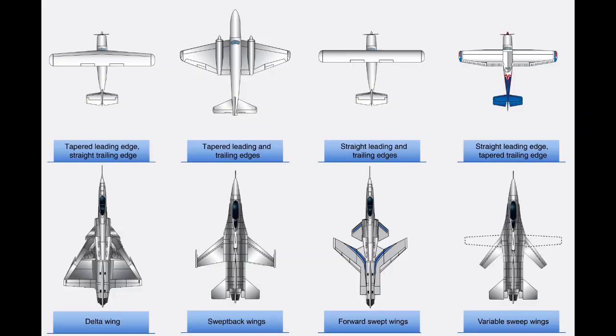Both the leading edge and the trailing edge of the wing may be straight or curved, or one edge may be straight and the other curved. One or both edges may be tapered so that the wing is narrower at the tip than at the root where it joins the fuselage. The wing tip may be square, rounded, or even pointed.